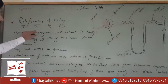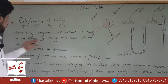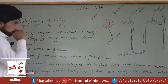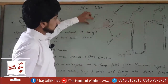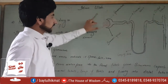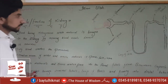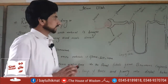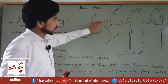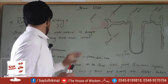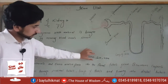Blood having nitrogenous waste material is brought to the kidney by incoming blood vessels known as arterioles. The dirty blood reaches the glomerulus. This is the filtration of water and waste material — i.e., glucose, salt, urea.